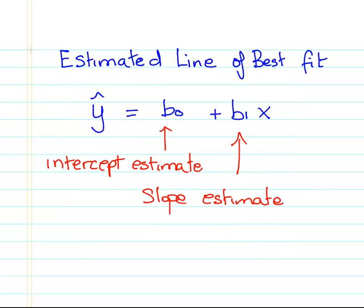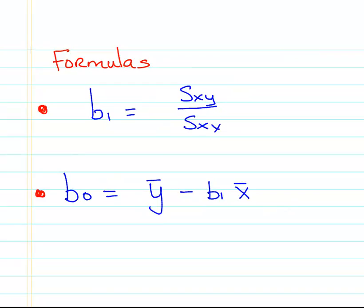The main parts are the intercept estimate and the slope estimate. That's essentially the two key components that we have to calculate. Counterintuitively, we actually will go with B1 first. What we're going to do is calculate B1, which is the slope estimate. This is actually a nice simple calculation. It's simply SXY over SXX.